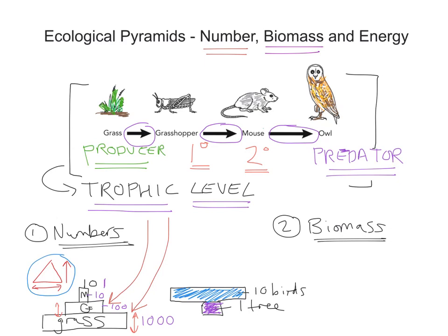When you work out the biomass, you can still draw one of these pyramids. It has to be neat and proportional. What we're looking at is a diagrammatic representation of the biomass of the organisms — not the number of organisms, but the biological mass of all the organisms at each trophic level. So we're not just looking at the biomass of one shard of grass, but the biomass of all the grass, all the grasshoppers, all the mice, and all the owls.